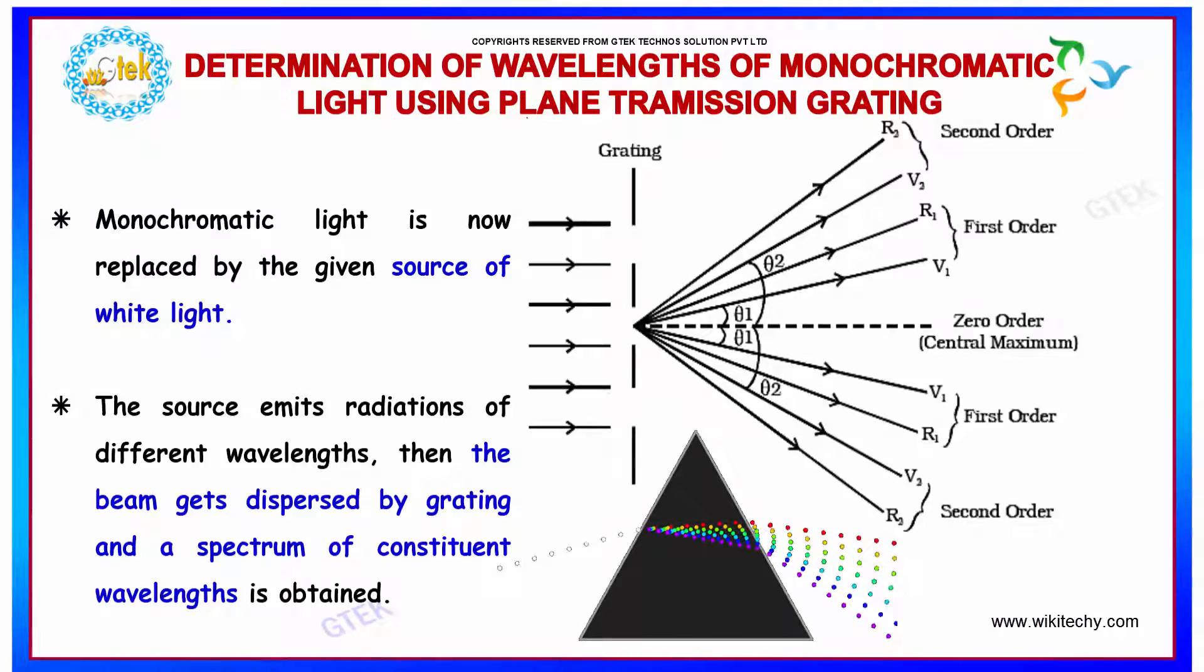Let's talk about the determination of wavelength of monochromatic light using plane transmission grating. The monochromatic light is now replaced by the given source of white light.